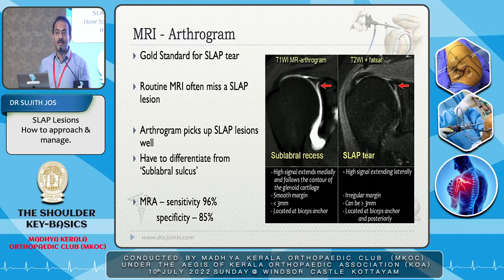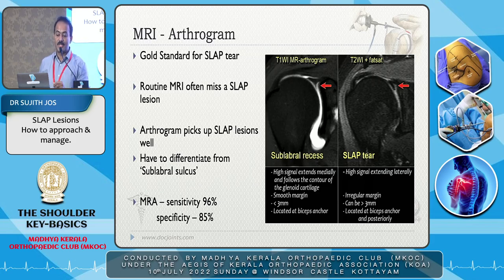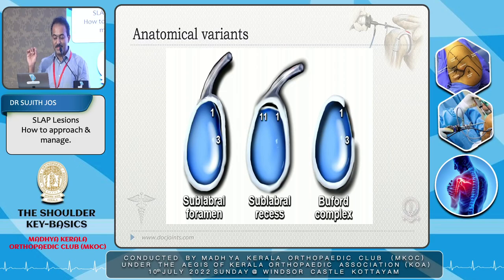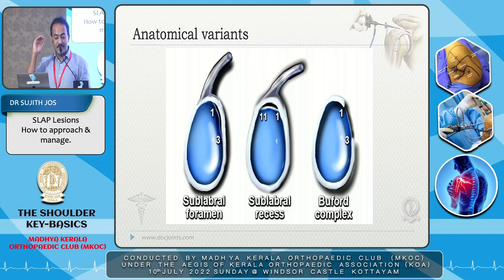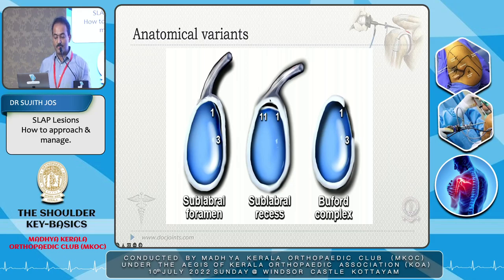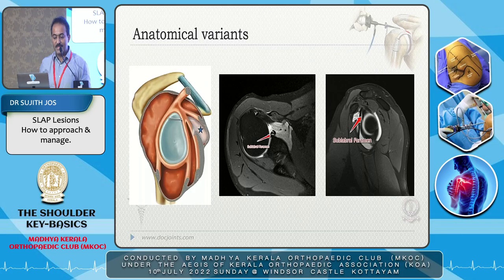MRI arthrogram is the gold standard for SLAP tears, picking up most superior labral tears with sensitivity of around 96% and specificity of around 85%. You must differentiate between a sublabral recess or sulcus and a SLAP tear — the tear goes more into the triangle toward the glenoid bone. Normal anatomical variants to keep in mind include the sublabral foramen, sublabral recess, and the Buford complex, where the anterior labrum may be missing up to the 3 o'clock position and can simply be left alone.